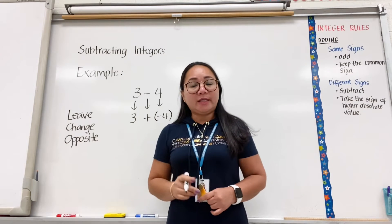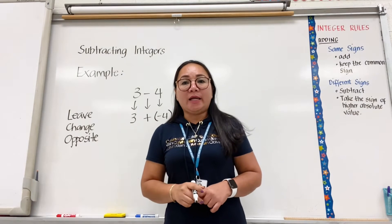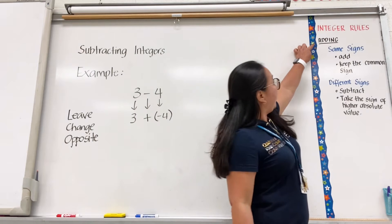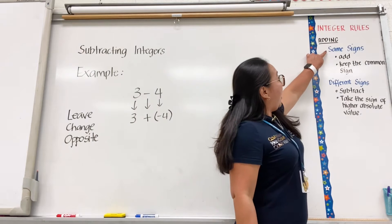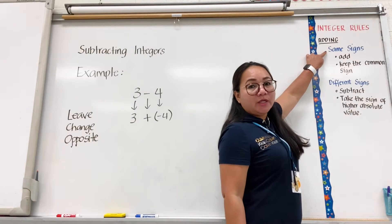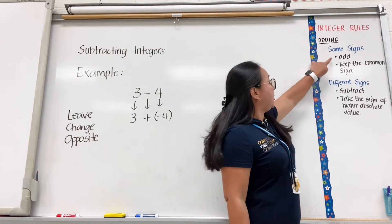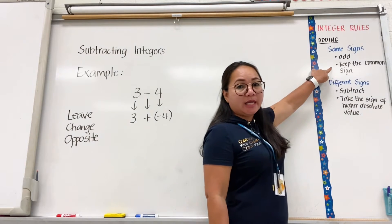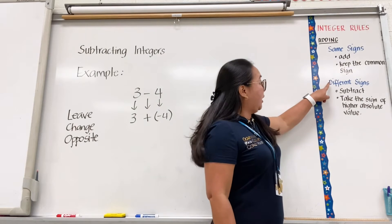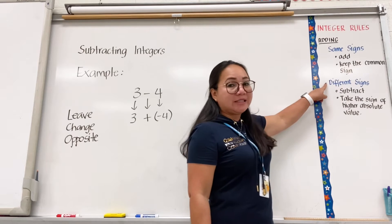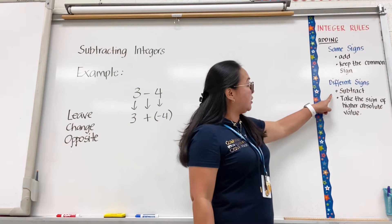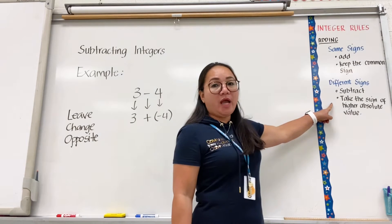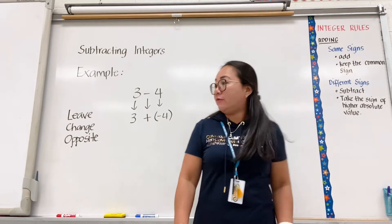After that, apply the rules for adding integers. For integers with the same signs, you add and keep the common sign. For integers with different signs, you subtract and take the sign of the higher absolute value.